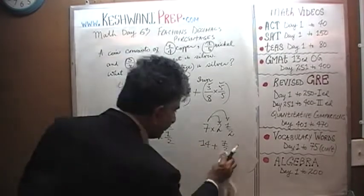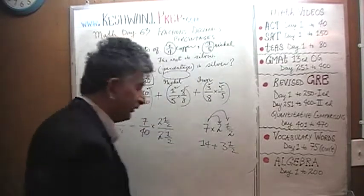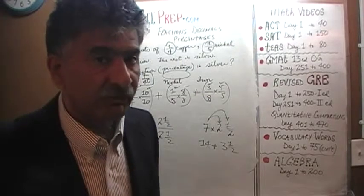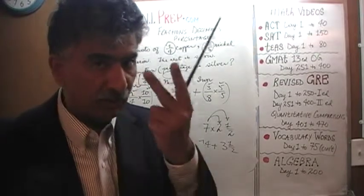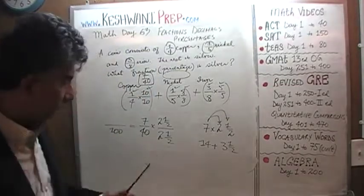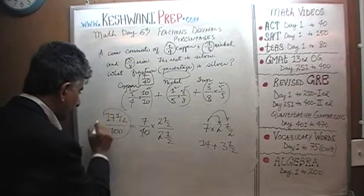7 halves. You see, 7 times half is 7 halves, which is simply 3.5. Because 3 has 6 halves, each one has 2 halves, so 1 is made up of 2 halves. So we have 6 halves and a half, 7 halves. So 17.5, that's it, we're done.